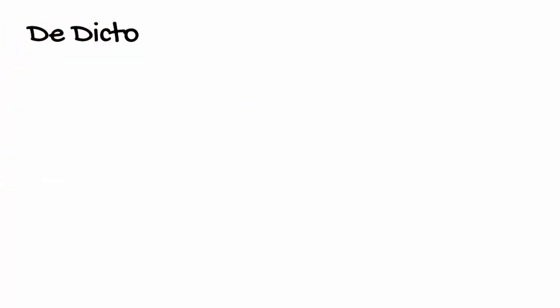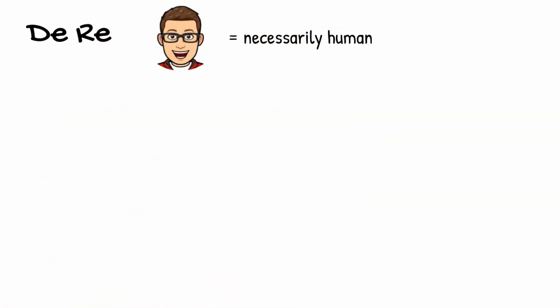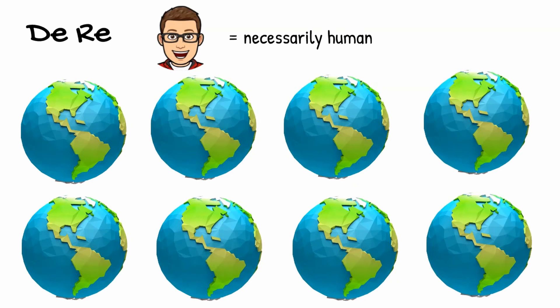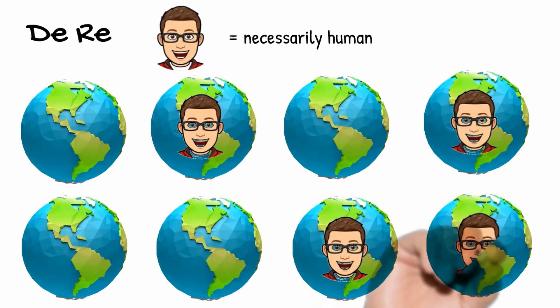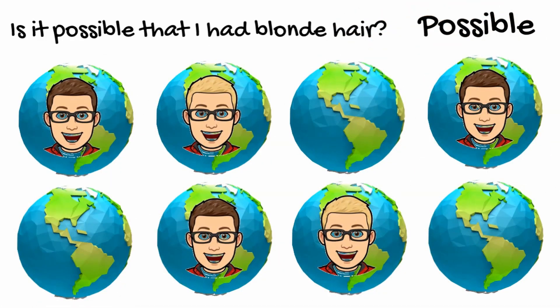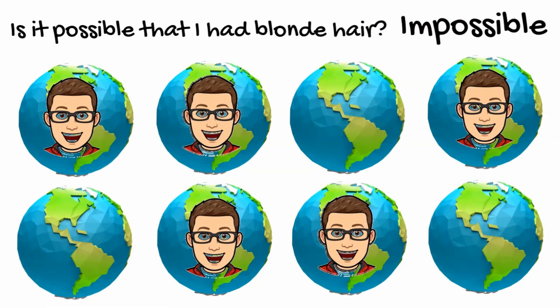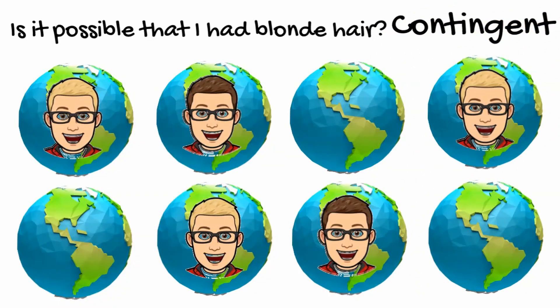For de dicto modality, something is necessary if it's true in all possible worlds. This isn't the case for de re modality. For example, lots of people claim that if I exist, I'm necessarily a human being — there's a necessity that attaches to me. But this doesn't mean I exist in all possible worlds. Rather, it means that in all possible worlds in which I exist, I'm necessarily a human being; I couldn't be anything else. To illustrate: if it's possible in a de re sense that I had blonde hair, there'll be some possible worlds where I exist and have blonde hair. If it's impossible, there'll be no such worlds. If my having blonde hair is necessary in a de re sense, then in all possible worlds where I exist, I will have blonde hair. But if it's contingent, I'll only have blonde hair in some of the worlds I exist in.